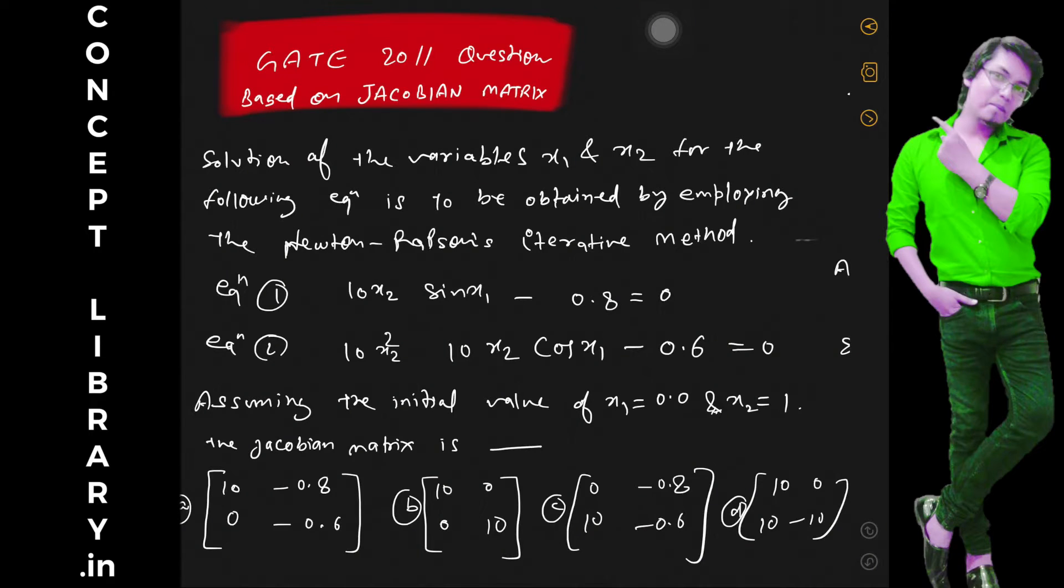Welcome guys, this was the question in GATE 2011 based on Jacobian matrix and it was a really good question and easy also. Solution of the variables x1 and x2 for the following equations: 10x2 sin x1 minus 0.8 is equal to 0